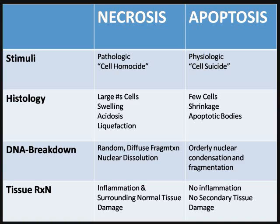Apoptosis is primarily physiological — it's a genetically regulated process in response to a pathogen that the body reacts to, usually antibody-related. Think of this as cell suicide. Histologically, apoptosis involves few cells affected, unlike necrosis. We see cellular shrinking due to hydrolysis and cross-linking of structural proteins within the cytoplasm and the nucleus.